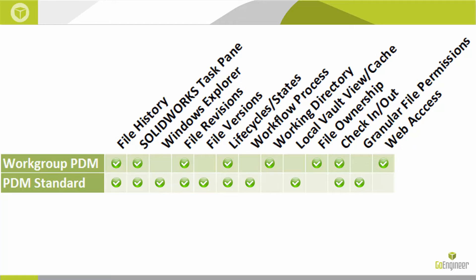Architecturally, Workgroup PDM and PDM Standard are completely different. Workgroup PDM is a flat folder-based system using text files to manage file references and metadata, whereas PDM Standard uses a Microsoft SQL Express database backend with a hexadecimal folder structure for file hashing, delivering better and more reliable performance as datasets grow. It shares this architecture with PDM Professional. Permissions in PDM Standard are also very granular — in Workgroup PDM, folder permissions are simply read-only, read-write, or no access. PDM Standard provides specific control over who can see, edit, move, delete, destroy, view BOMs, and more.